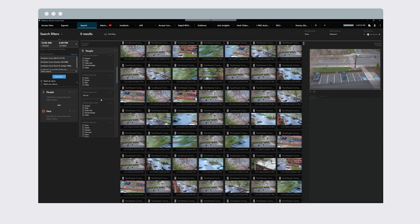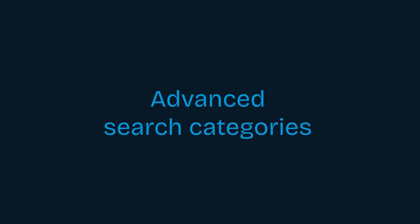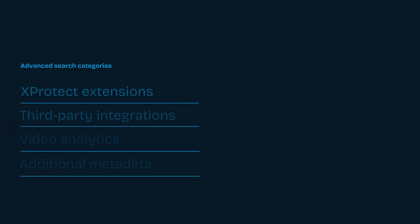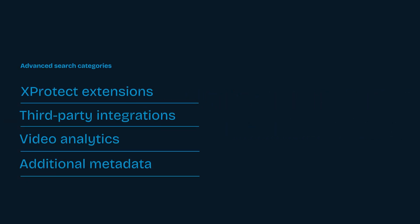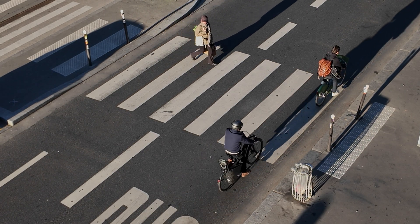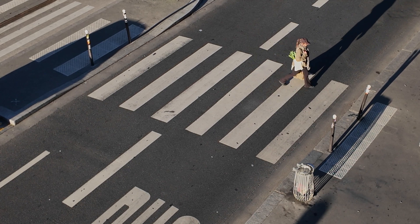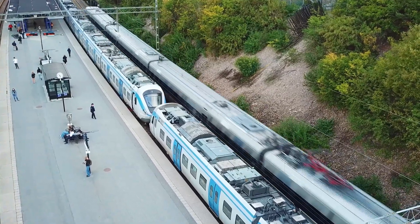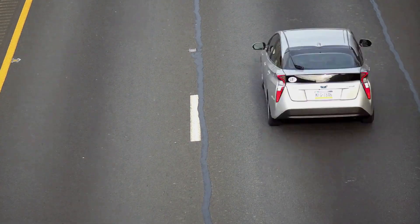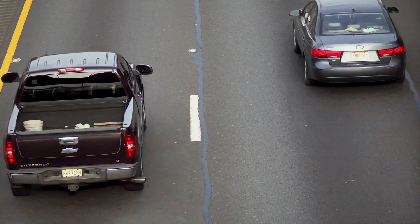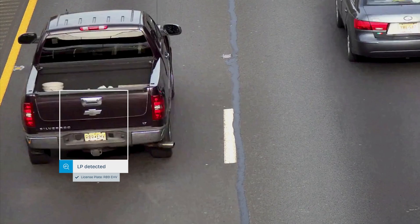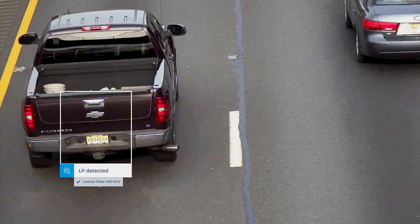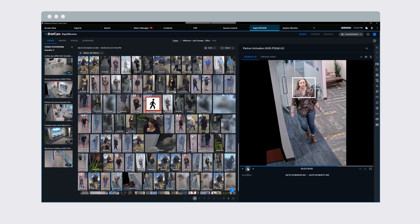When your system uses XProtect extensions, third-party integrations, video analytics, or additional ONVIF metadata, you may have access to advanced search categories. With the optional tools enabled, you can find people or vehicles, including looking for criteria such as color, clothing type, and vehicle type. When enabled, XProtect may allow you to search camera-based video analytics such as license plate numbers or facial features.